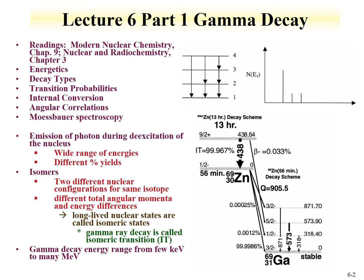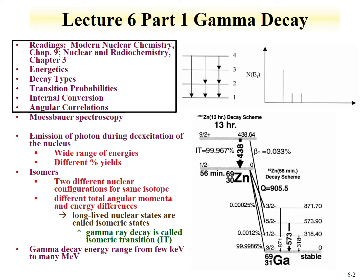This lecture is going to be in two parts. The first part is going to cover energetics related to gamma decay, the types of gamma decays, transition probabilities, and what percentage of the time a gamma occurs. We'll also discuss internal conversion and angular correlation of gamma emission — in other words, if you could align the nucleus, certain nuclei properties would dictate that certain gamma lines will emit in defined angles.